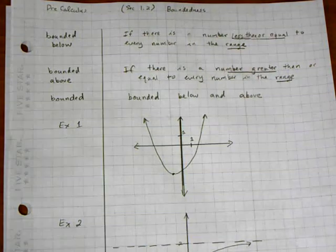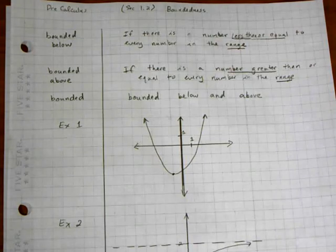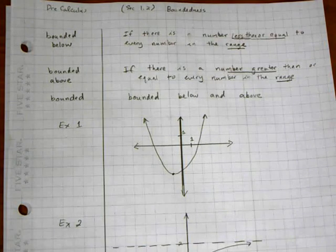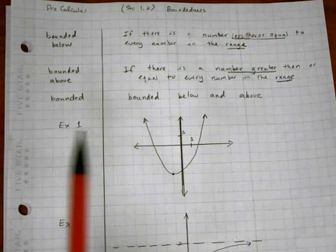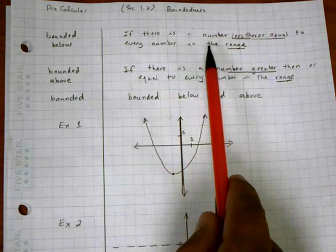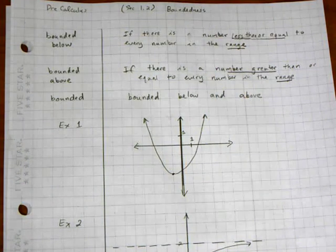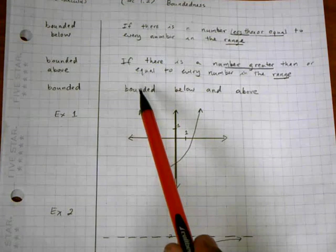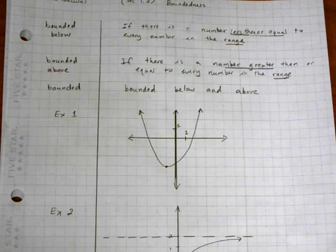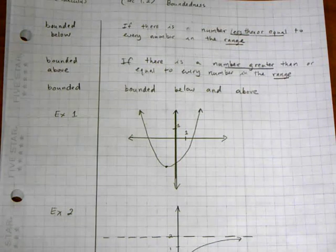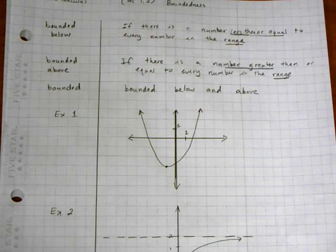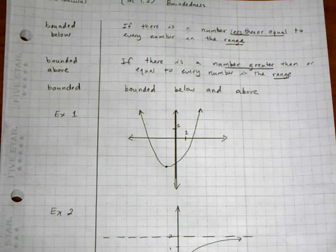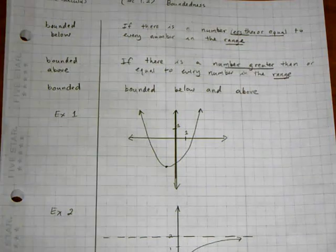In this video we're going to look at boundedness, which gives us a way to look at restrictions on a particular function. A function is bounded below if there is a number less than or equal to every number in the range. When talking about boundedness we're always talking about the range. Similarly, if there's a number greater than or equal to every number in the range, the function is bounded above. If it has both an upper and lower limit on the range, it is simply called bounded.